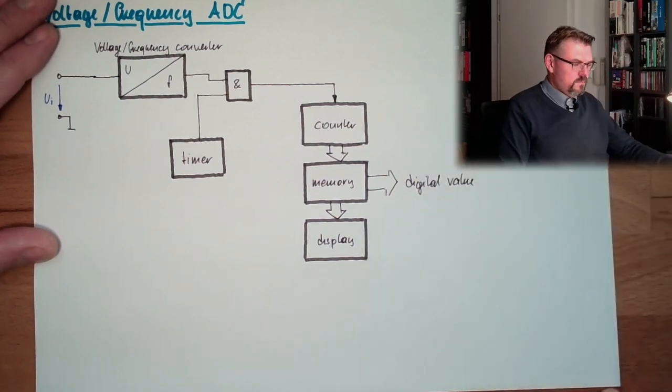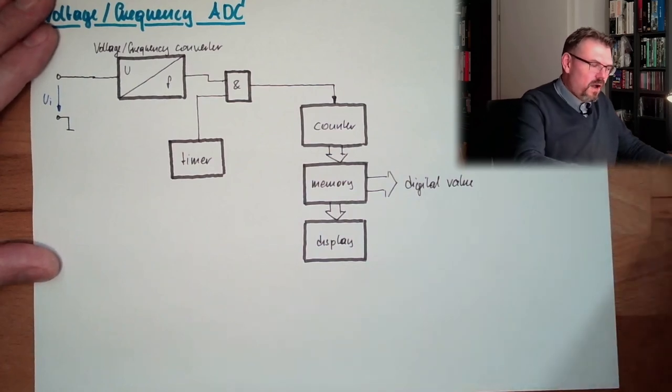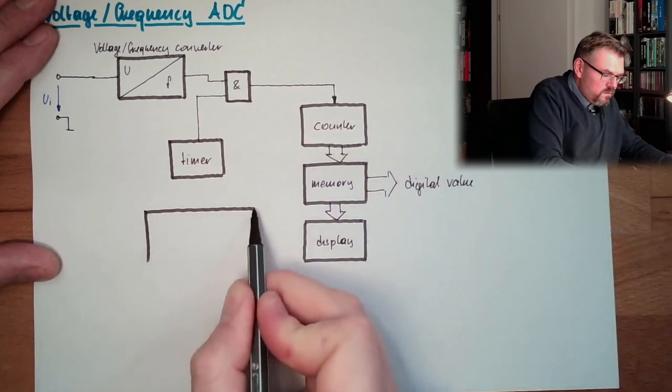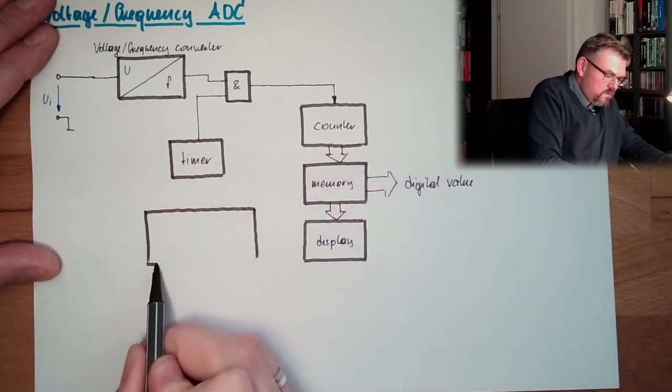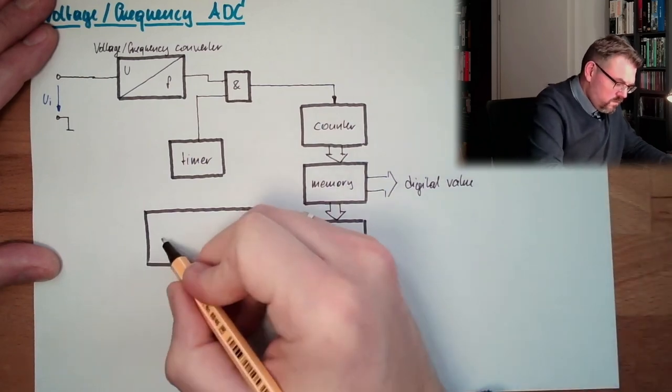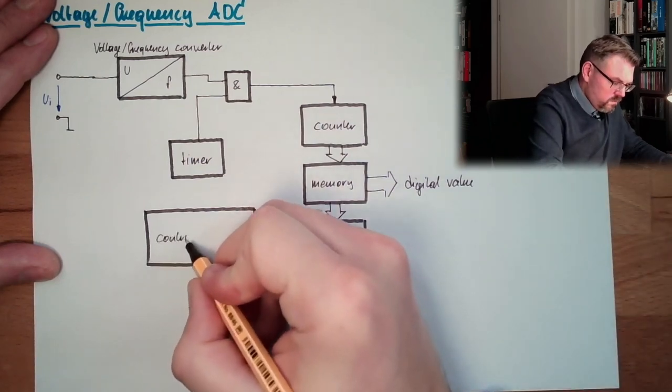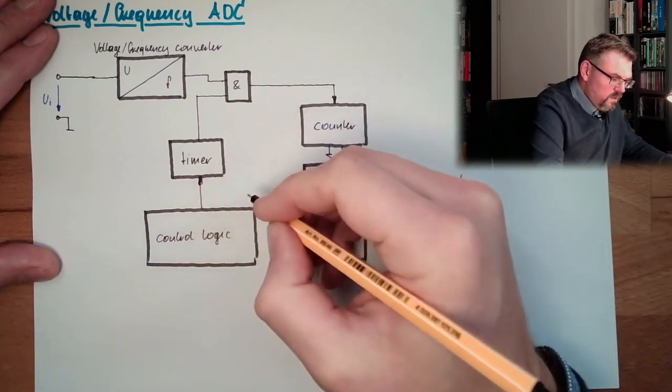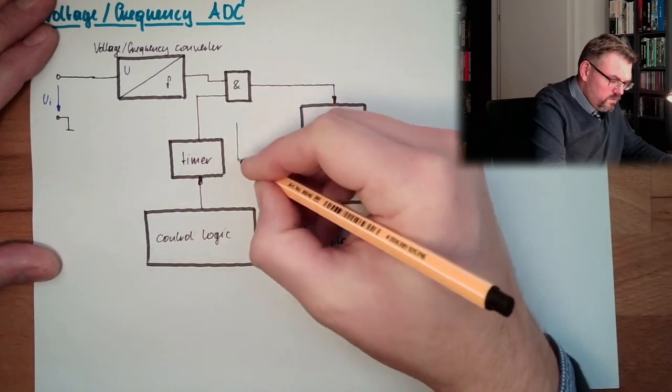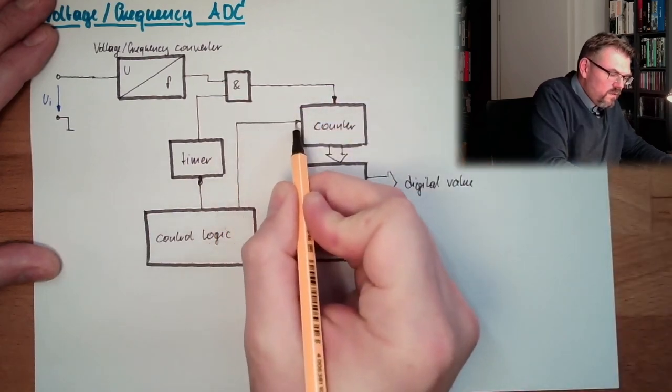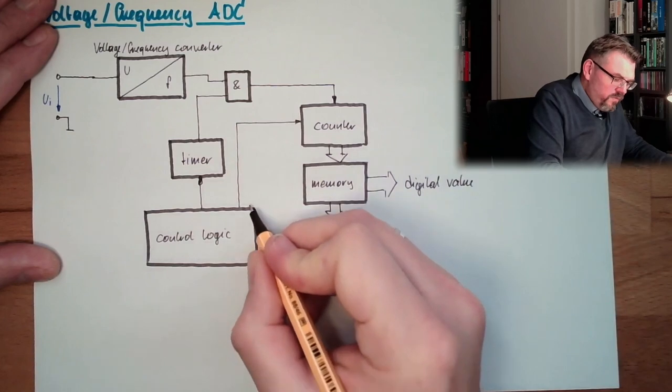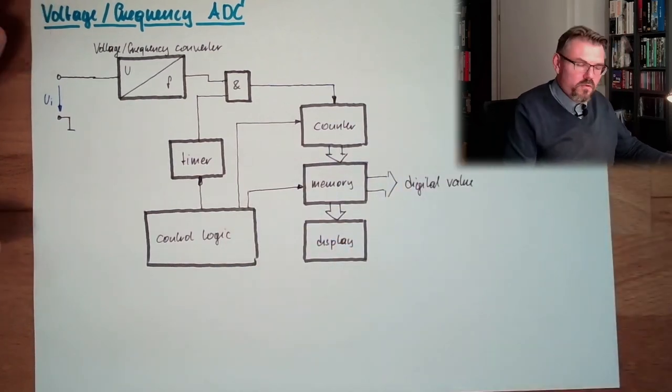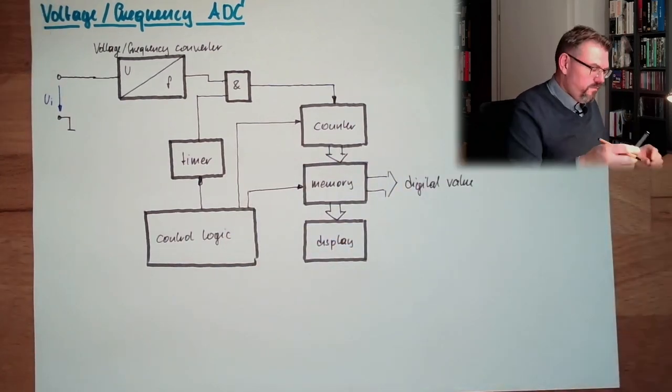This needs to be controlled somehow, so there is a control logic. This logic needs to start the timer, reset the counter, and trigger the transfer from the counter to the memory.